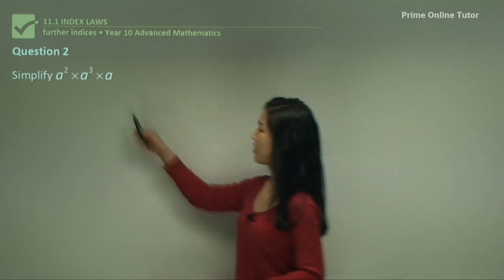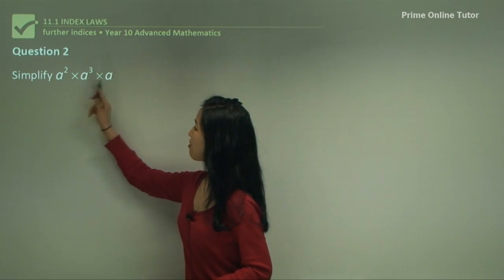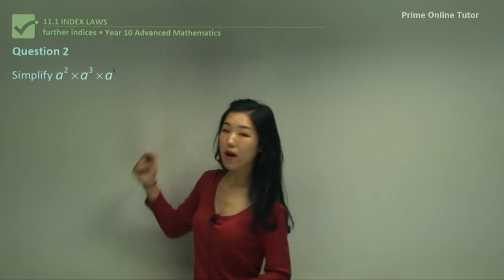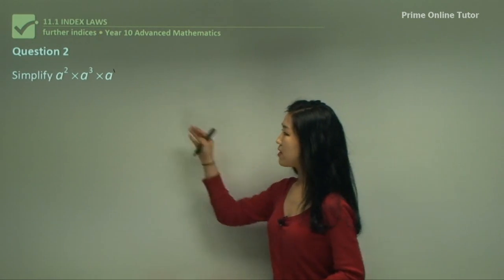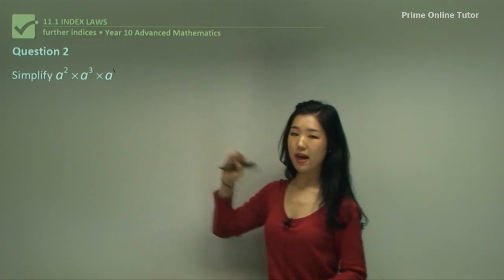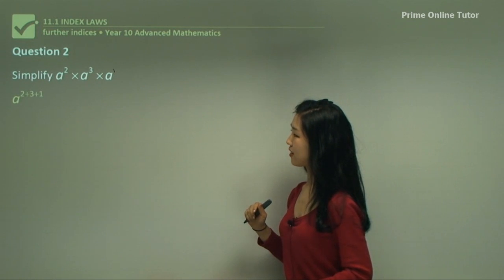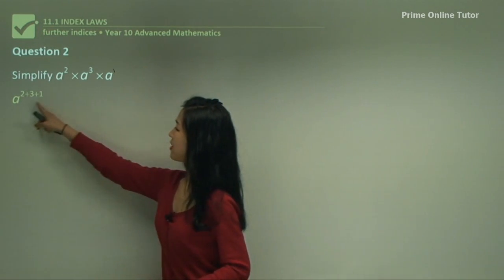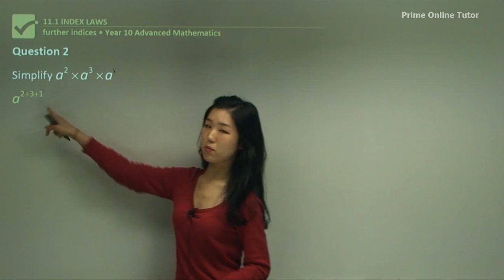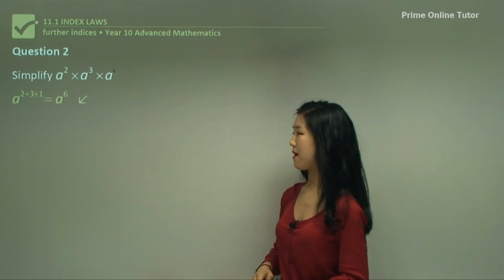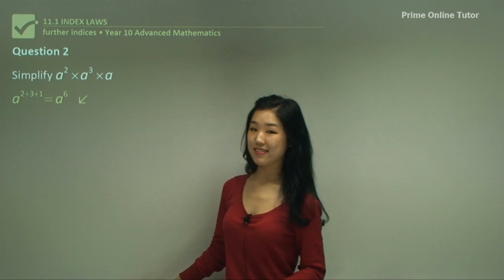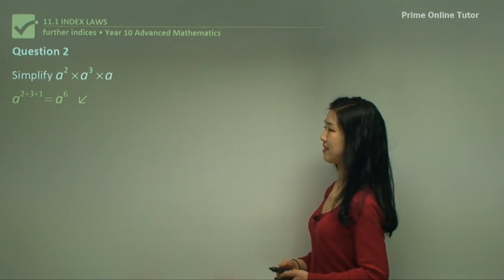Question two. The base is all the same. Remember, if there's nothing written, you know that it's power of 1. So even with three terms, it's all multiplying, so we simply add all the indices. The power of a becomes 2 plus 3 plus 1, which is simply a to the power of 6. Always leave the base as it is — we're only working with the indices.